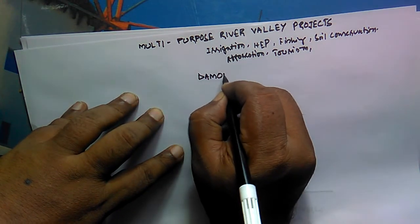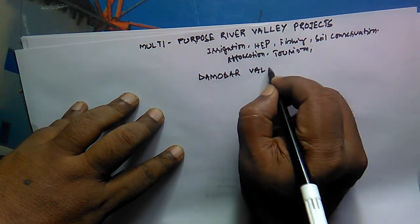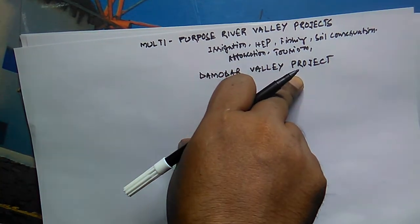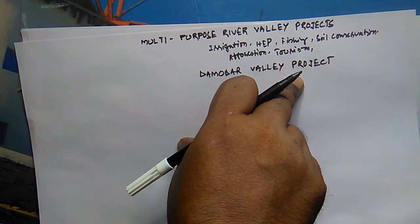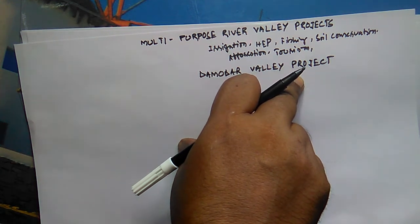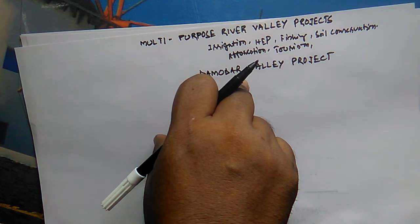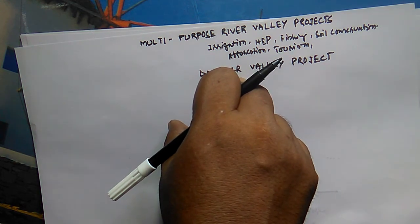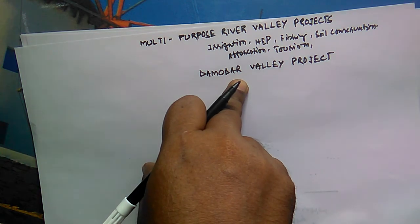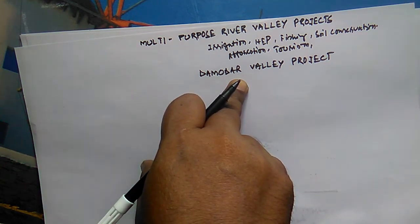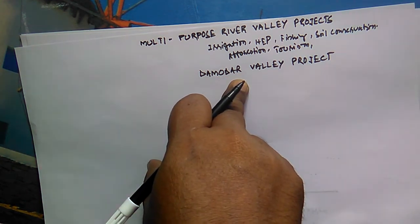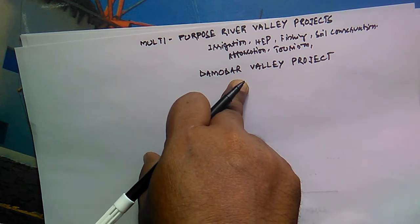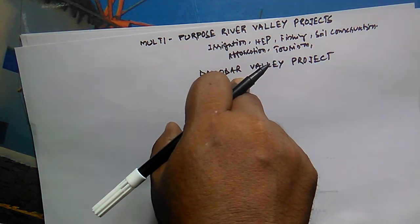The Damodar Valley Project was actually the first multi-purpose river valley project constructed in India after independence. The river Damodar, on which this project is located, rises from the Palamu district of Jharkhand, flowing through Ranchi, Hazaribagh, and Palamu districts before entering West Bengal. It flows through Burdwan and Hooghly districts before joining the river Hooghly near Falta and ultimately ending in the Bay of Bengal. The Damodar is a tributary of the Hooghly.